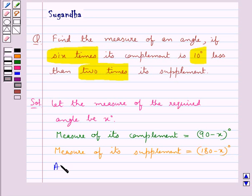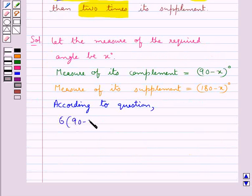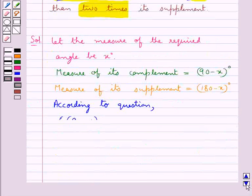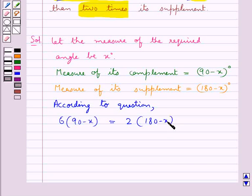Then according to the question we have 6 times its complement, that is 6 into 90 minus x, is 10 degrees less than 2 times its supplement. So 6 into 90 minus x would be equal to 2 into 180 minus x, that is 2 times its supplement, minus 10 degrees.